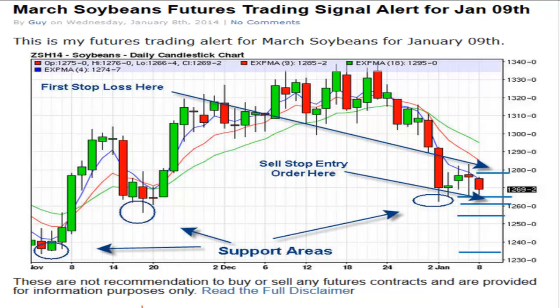This is my futures trading alert for March soybeans for January 9th. You can see on the chart my sell stop entry order would go right here below this low, and my first stop loss order would go right here. Here are the three support areas: this previous low here, here, and here.